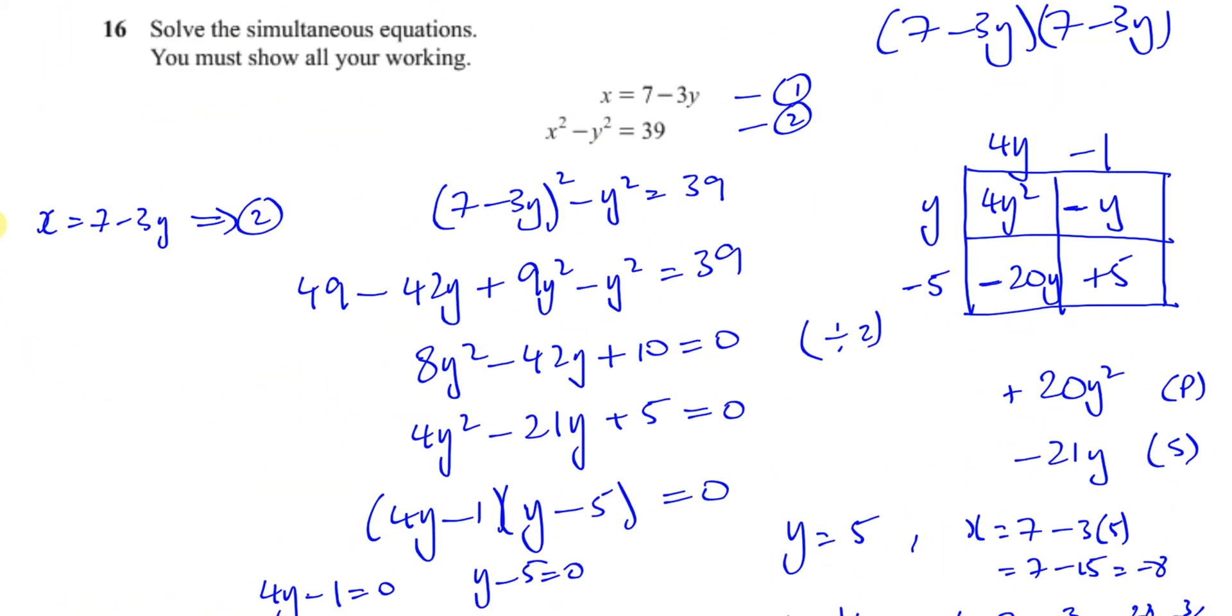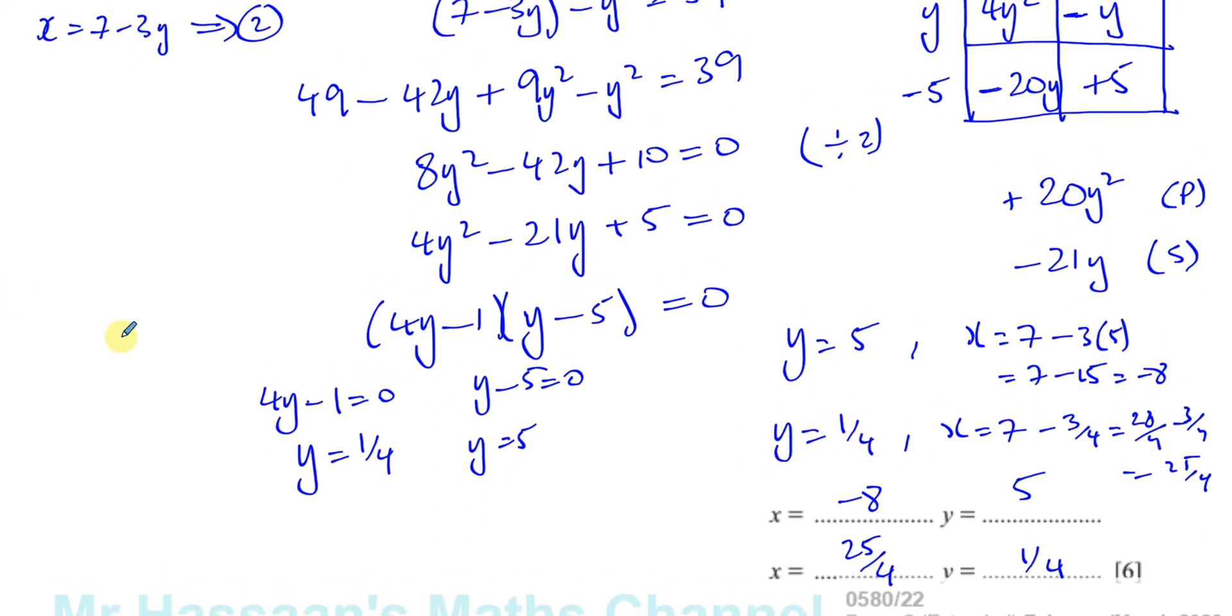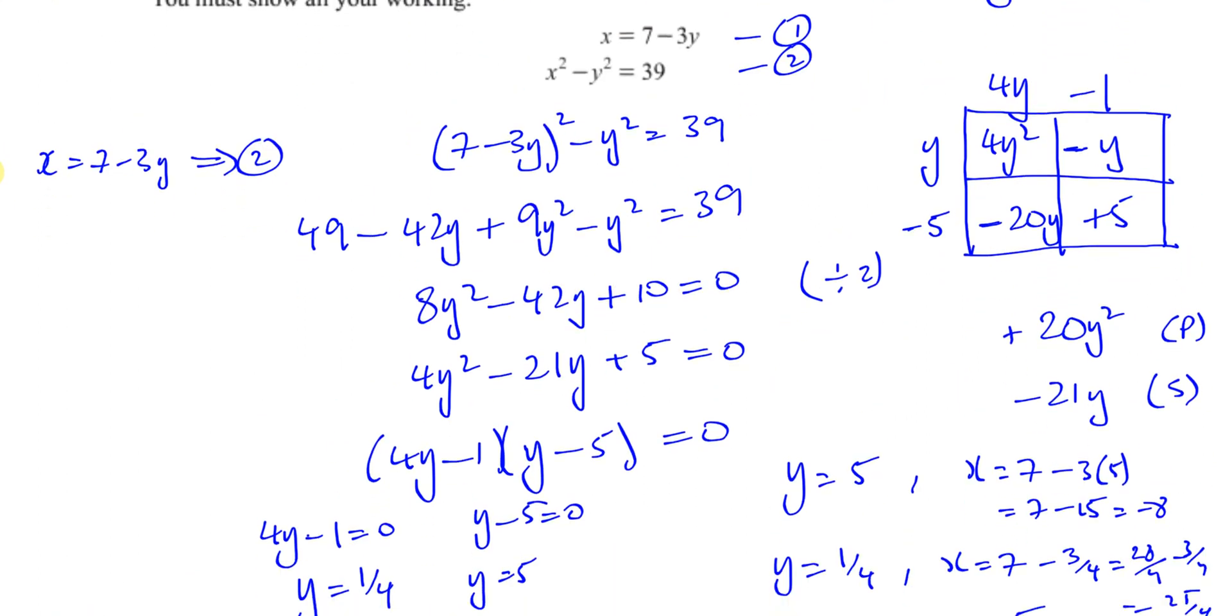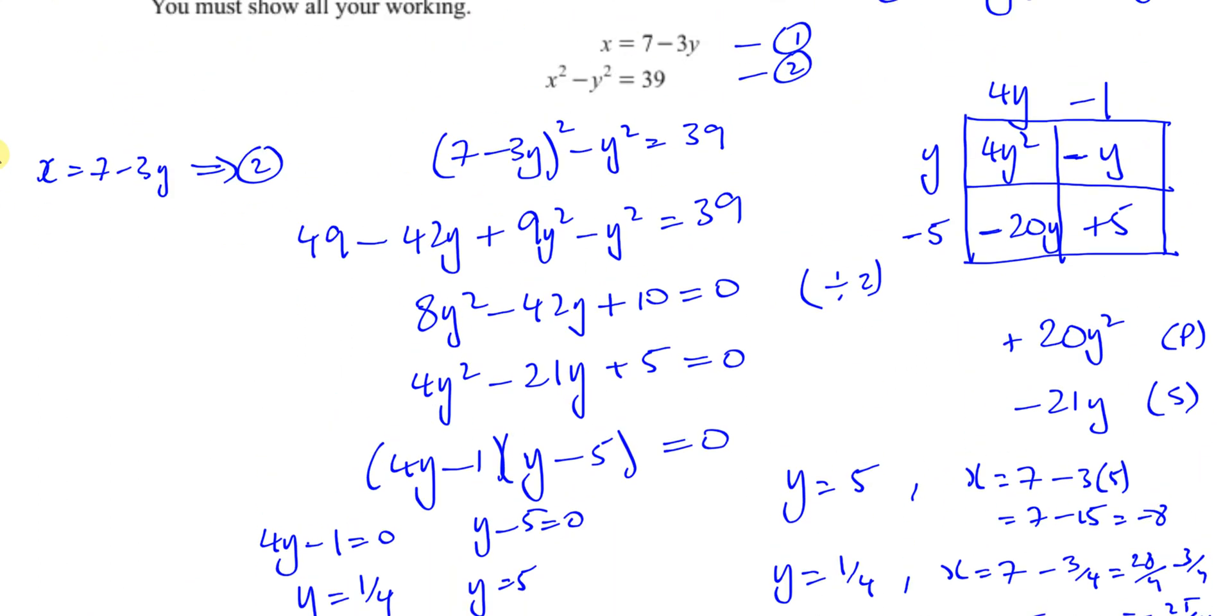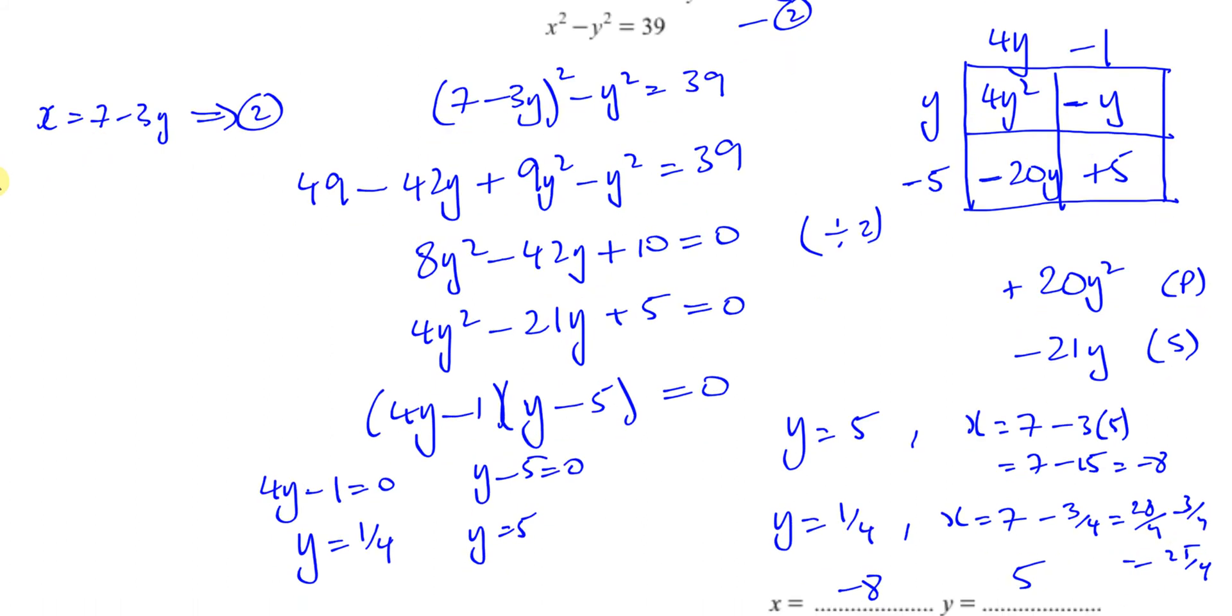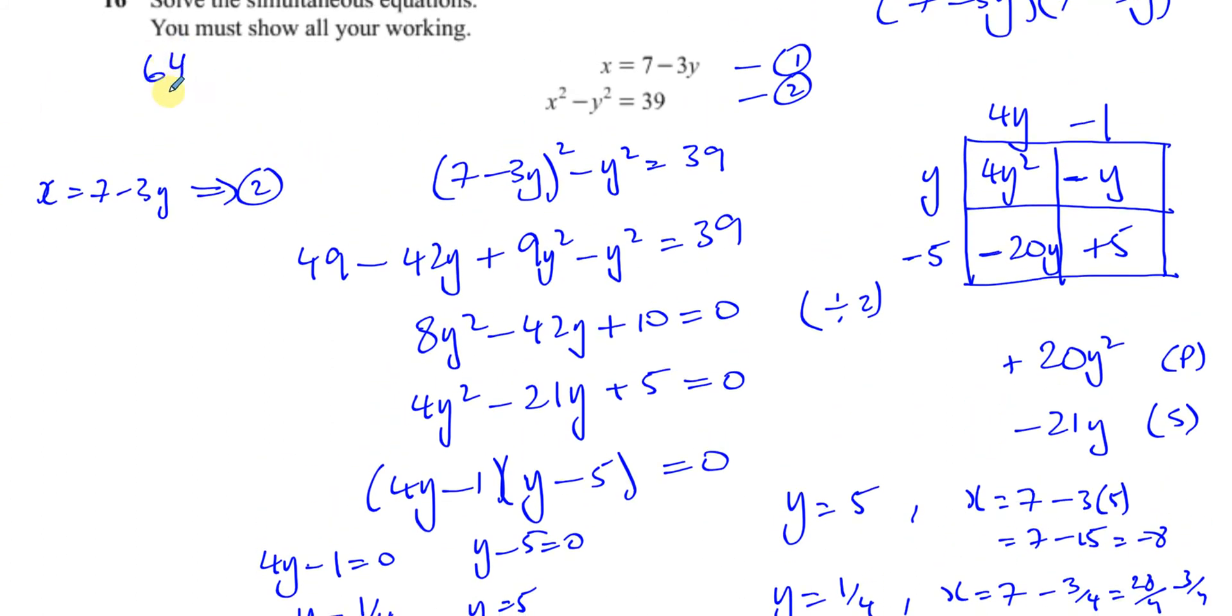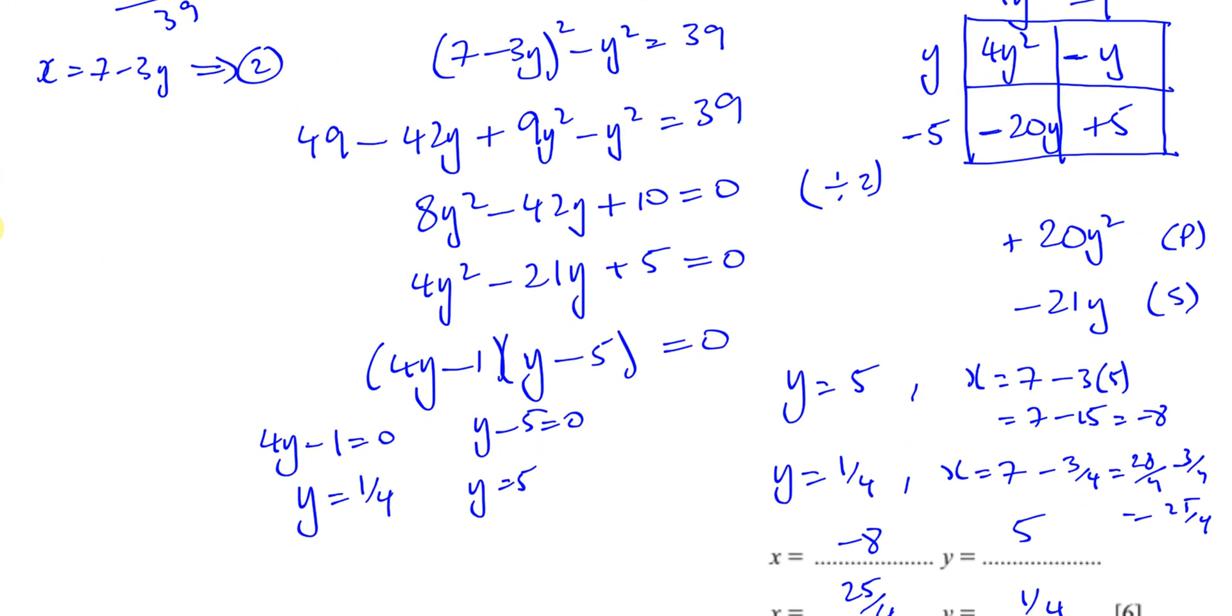And if you wanted to check to see if you were right, you could substitute these values into both of these two equations to see if they work. So let's just try the second one. We'll have minus 8, which is 8 squared, 64, 64 minus 25, 64 minus 25, it looks right to me. That's going to give you 39, yeah, that looks right.